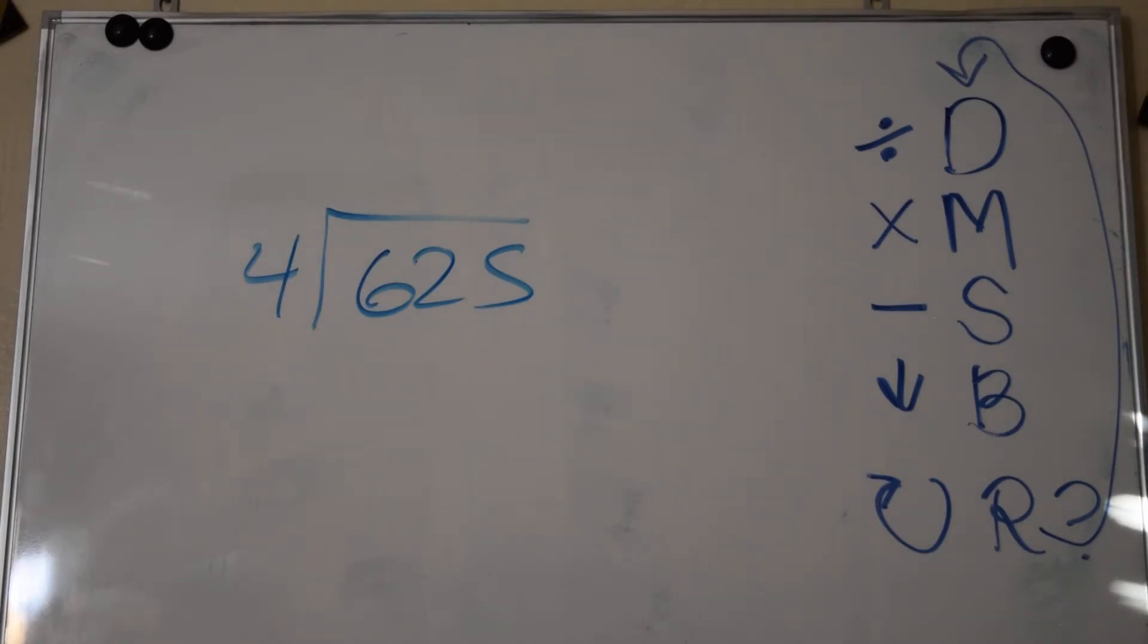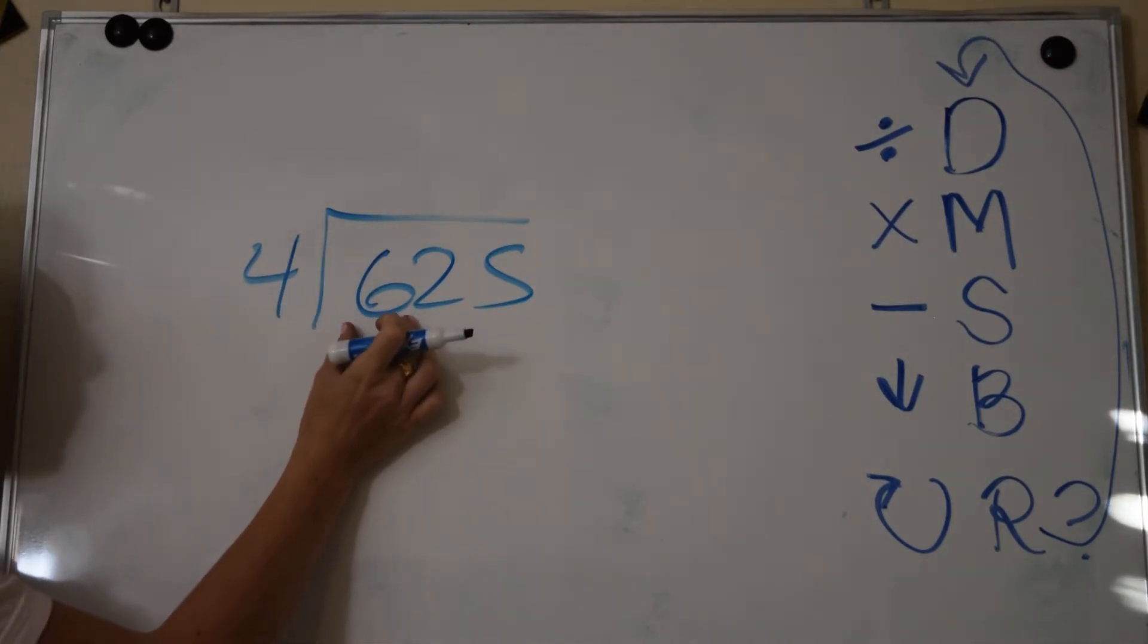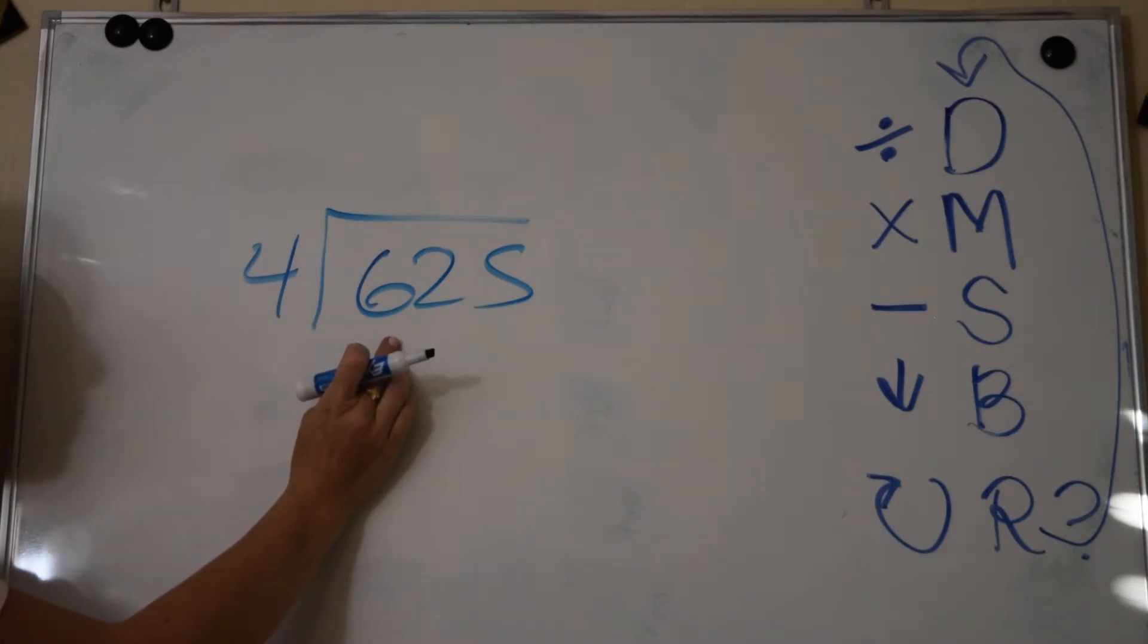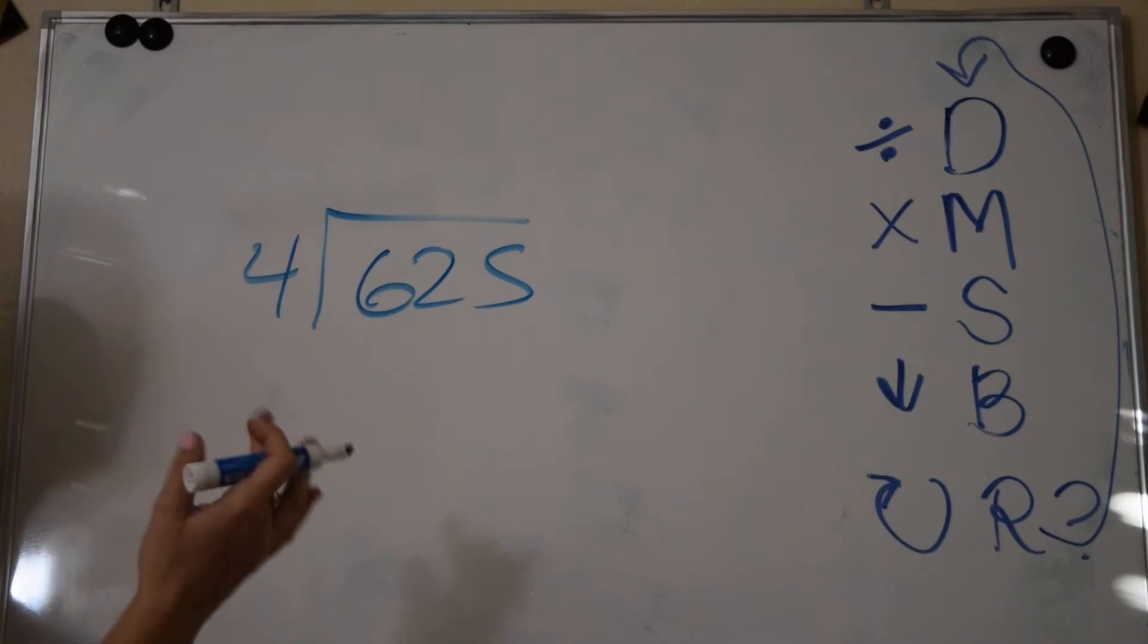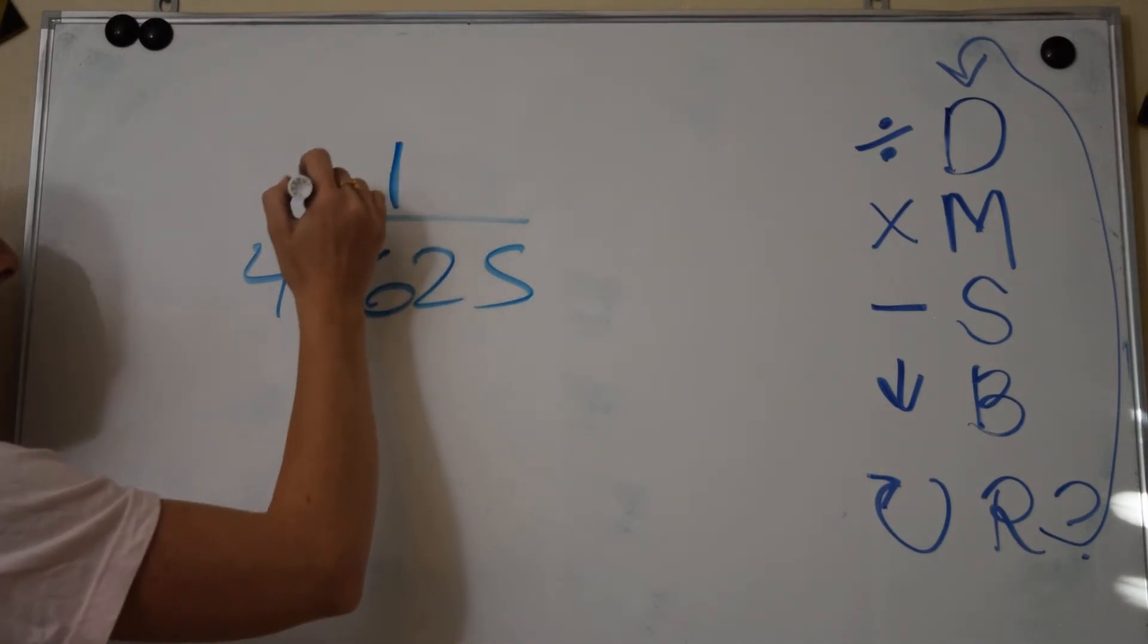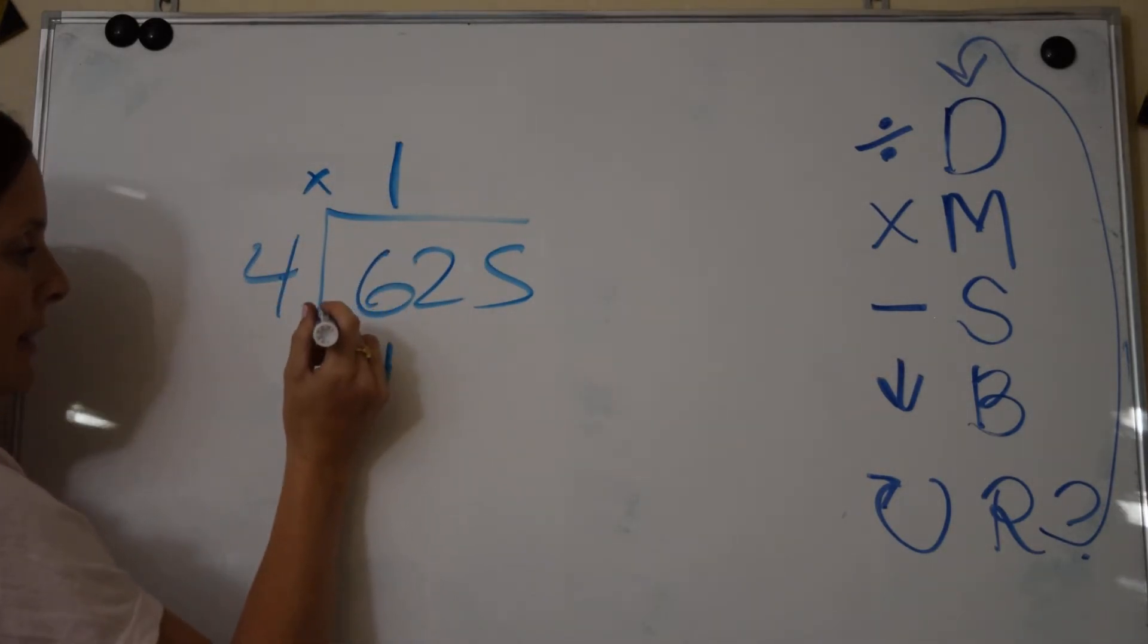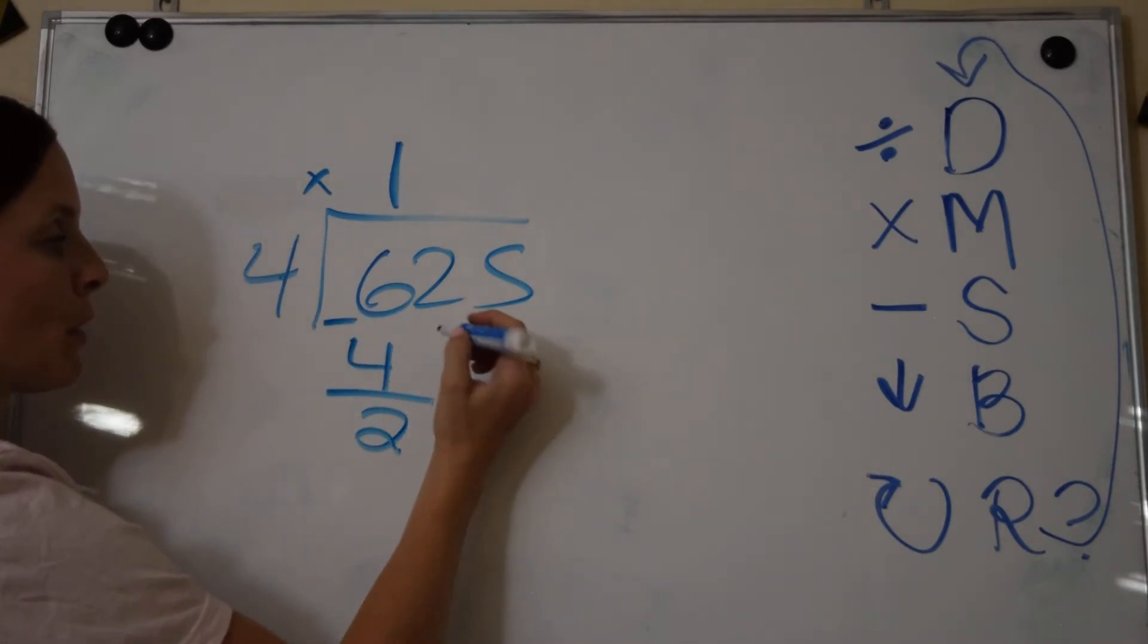Be sure that you remember your steps. Always start with one digit at a time if you can. 4 can go into 6 at least once because 4 is smaller than 6. So 4 goes into 6 one time. Now I multiply: 1 times 4 is 4. Subtract: 6 minus 4 is 2. Bring down one digit at a time.